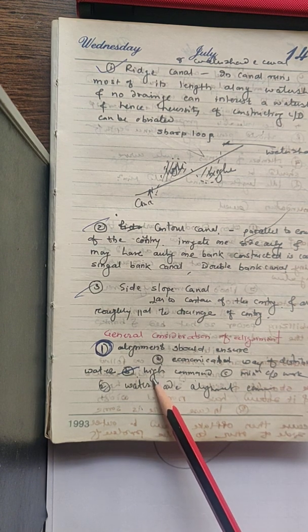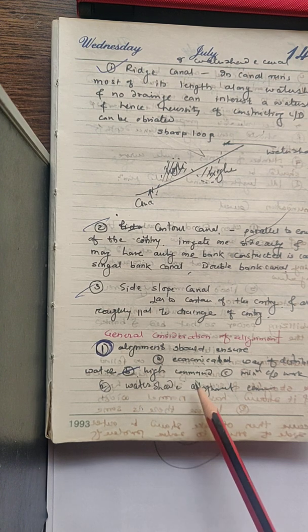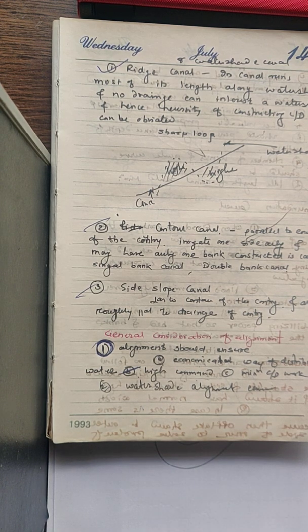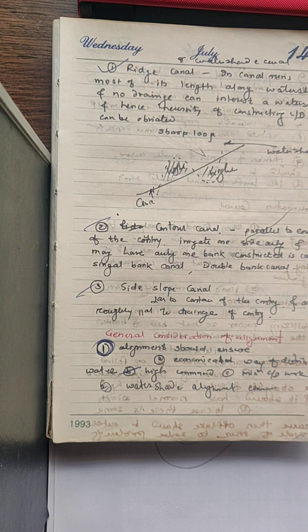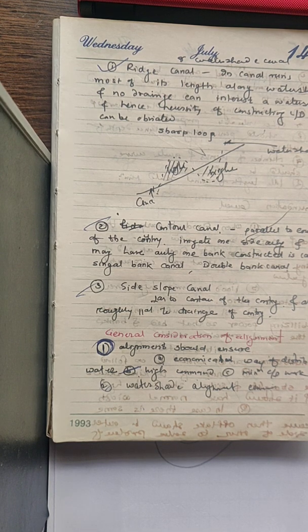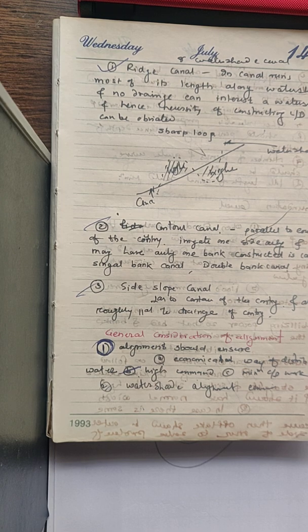Second consideration: canal alignment should be such that it will create a high command. Command means the area that can be irrigated is known as command. This canal should be aligned in such a way that command will be higher.